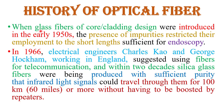Now the history of optical fiber. When glass fiber of core and cladding design were introduced in the early 1950s, the presence of impurities restricted their use to short lengths sufficient for endoscopy. In 1966, electrical engineers Charles Kao and George Hockham, working in England, suggested fiber for telecommunication, and within two decades silica glass fibers were being produced with sufficient purity that infrared light signals could travel through them for 100 kilometers — about 60 miles — without needing to be boosted by repeaters.